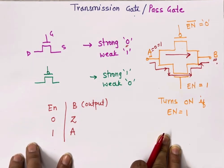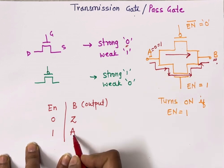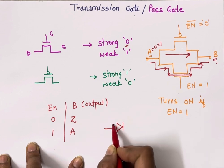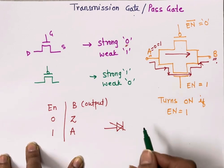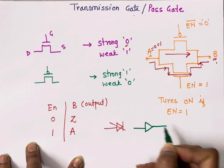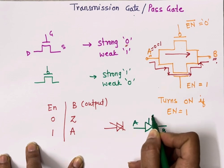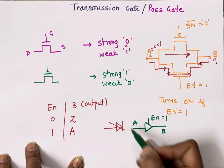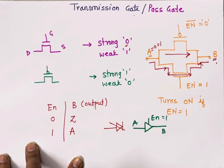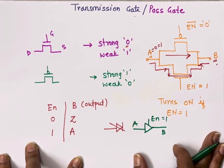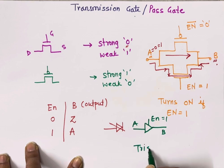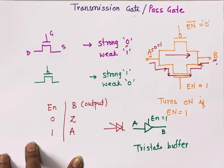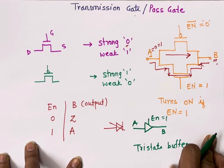Another thing is that the behavior of our transmission gate is similar to a tri-state buffer. In a tri-state buffer, input A goes to output B with an enable pin. When enable is equal to one, the buffer passes input to the output side. So we can say the transmission gate acts as a tri-state buffer. I have prepared a separate video for the tri-state buffer — the link is given in the description box, please have a look.